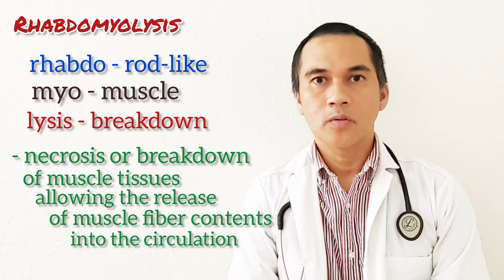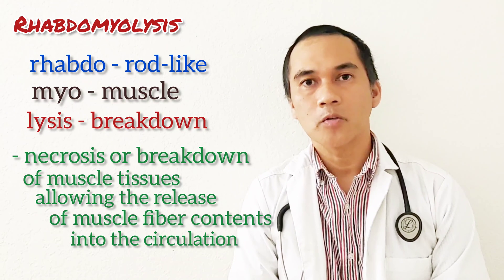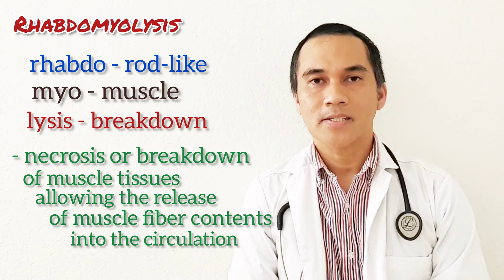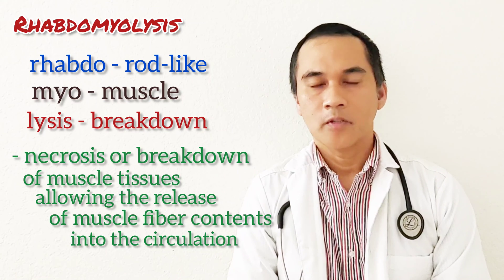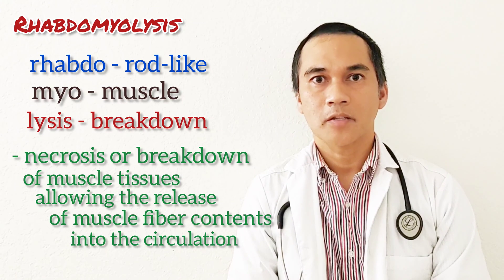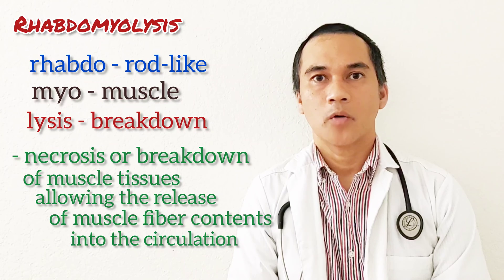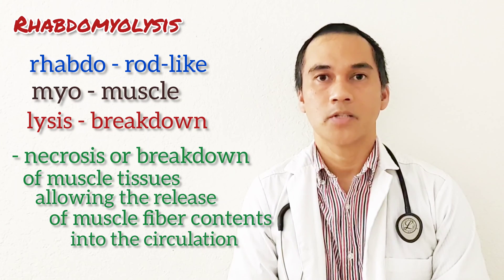Rhabdo means rod-like shape, myo means muscle, and lysis means breakdown. Rhabdomyolysis is a necrosis or breakdown of muscle tissues, allowing the release of muscle fibers into the circulation.